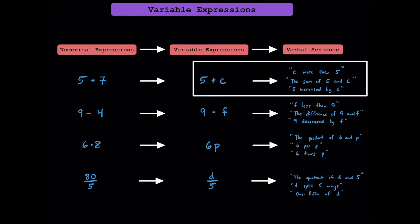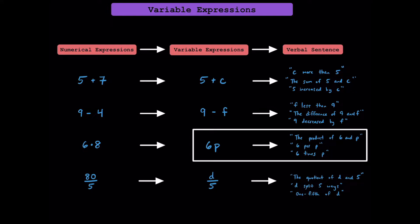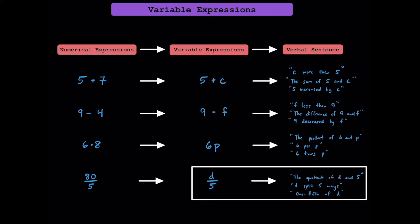Here are some different ways of reading variable expressions. While we can read it as 5 plus C, it's more important that you understand it as C more than 5, the sum of C and 5, or 5 increased by C. This next one is 9 minus F, but more importantly it can be expressed as F less than 9, the difference of 9 and F, or 9 decreased by F. The third one is read as 6P — understand it as the product of 6 and P, 6 per P, or 6 times P. Whenever you see a number directly next to a letter, it always means multiplication. You'll also see instances where two letters are next to each other, and that also means multiplication. And finally, we have D over 5, or D divided by 5 — read as the quotient of D and 5, D split 5 ways, or one fifth of D.